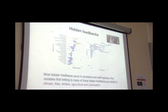In terms of hidden feedbacks, we found a slightly different story. We found that the terrestrial regime shifts are the ones that produce more of those hidden feedbacks, and the variables that are related to them are of course climate variables, but also things like fire frequency, erosion, agriculture, and urbanization.